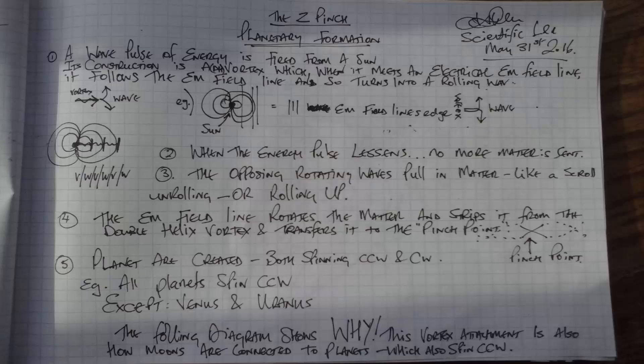Its construction is a double helix vortex which, when it meets an electrical EM field line, follows the EM field line and turns into a rolling wave. As you can see, I've got a picture of the sun there with its EM field bands flying out.